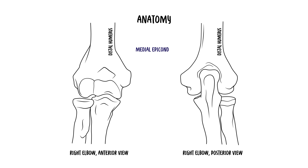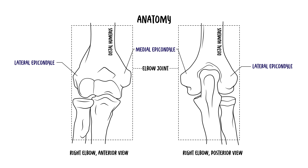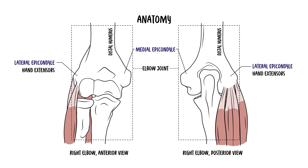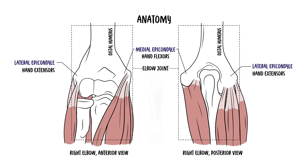Let's revise some anatomy. The distal humerus has a medial and lateral epicondyle — bony prominences easily palpated on the medial and lateral sides of the distal humerus, just proximal to the elbow joint. The lateral humeral epicondyle serves as the bony common origin of the wrist and extrinsic hand extensors, whereas the medial humeral epicondyle serves as the bony common origin of the wrist and extrinsic hand flexors.